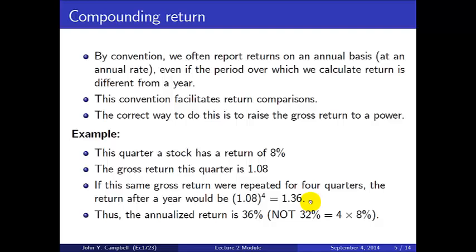So if you invest a dollar, after one quarter you have $1.08. You reinvest and after another quarter you have $1.08 squared. Continuing for a year gives you $1.36, which is 1.08 to the power 4. That means the annualized return is 36% — not the same as 4 × 8% = 32%. This is the power of compound interest.